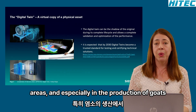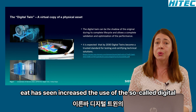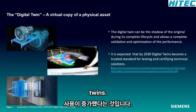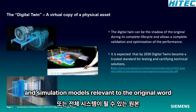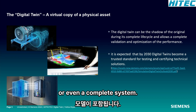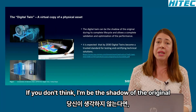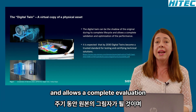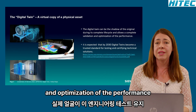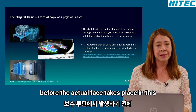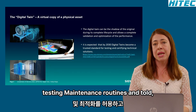In many application areas, and especially in the production of goods, it has increased the use of the so-called digital twins. A digital twin is a virtual copy that contains all the data and simulation models relevant to the original, where that original could be a product, a process, or even a complete system. The digital twin can be the shadow of the original during the whole life cycle, and allows a complete validation and optimization of the performance before the actual phase takes place, in engineering, testing, maintenance routines, and so on.